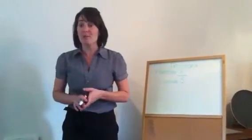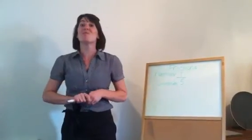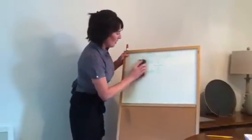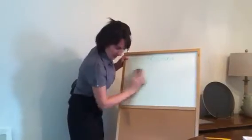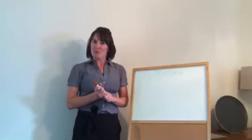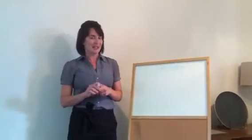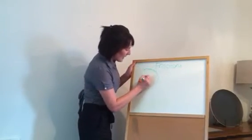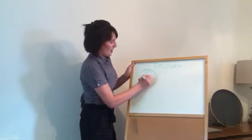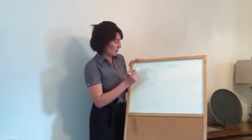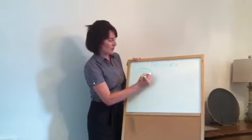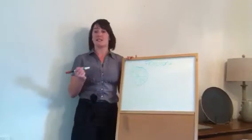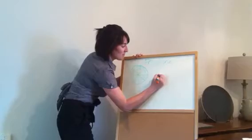Very good. So, today, moving on, we are going to learn how to multiply fractions. We have lots to learn and lots of fun stuff to do. So, to begin, let's review a little bit more, just to make sure we have a good understanding before we learn something new. Let's say we have a pizza, and this pizza has — how many slices? Let's count them together. One, two, three, four, five, six, seven, eight. Eight slices of pizza. So, that number becomes our denominator.